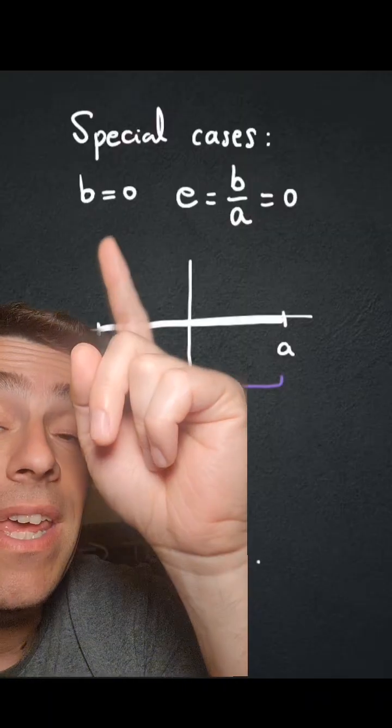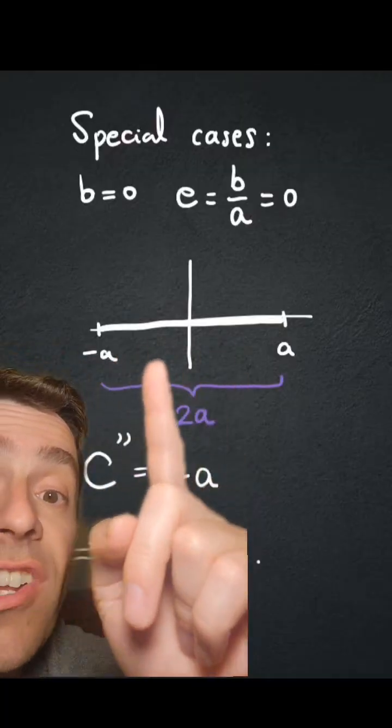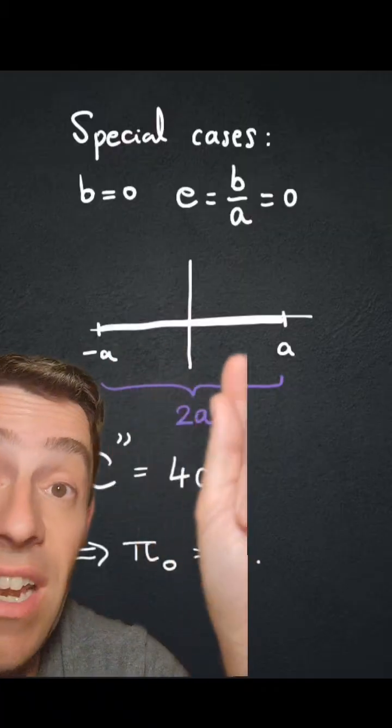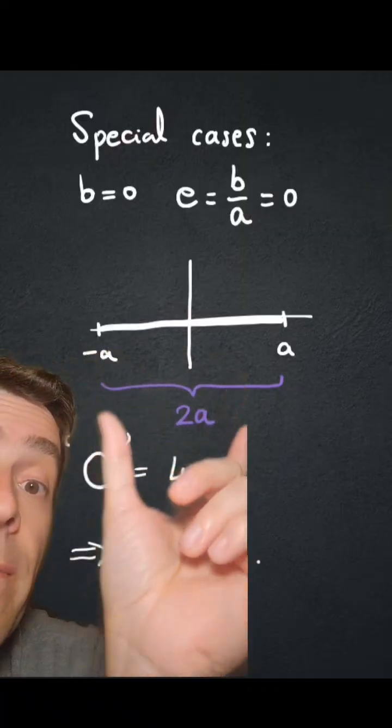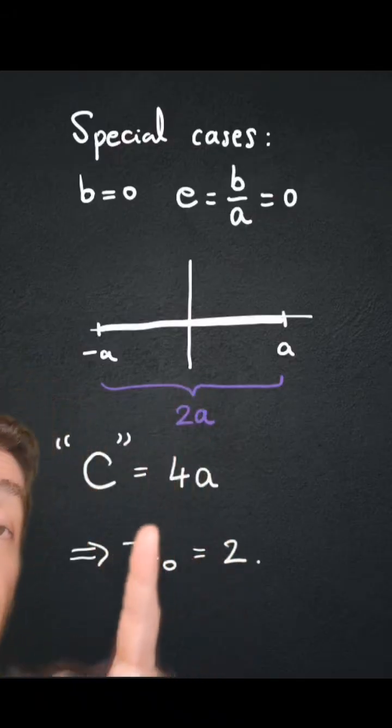In the case when b equals 0, the eccentricity is exactly 0, and that corresponds to the degenerate case when the ellipse has become just two straight lines from minus a to a. That length is 2a, so the circumference is twice that, 4a.